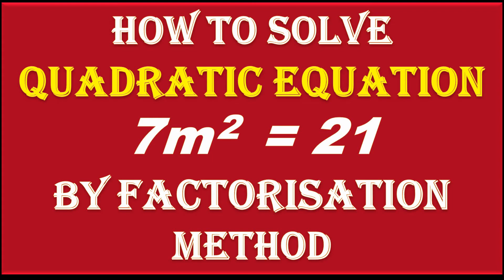Friends, now we have to solve the quadratic equation 7m² = 21m by factorization method.